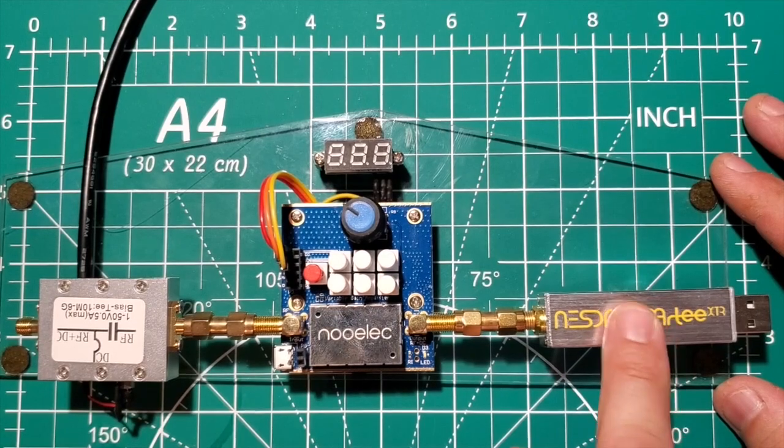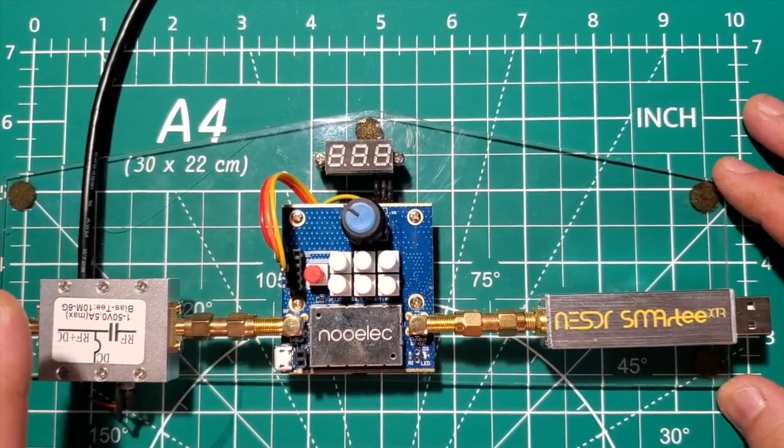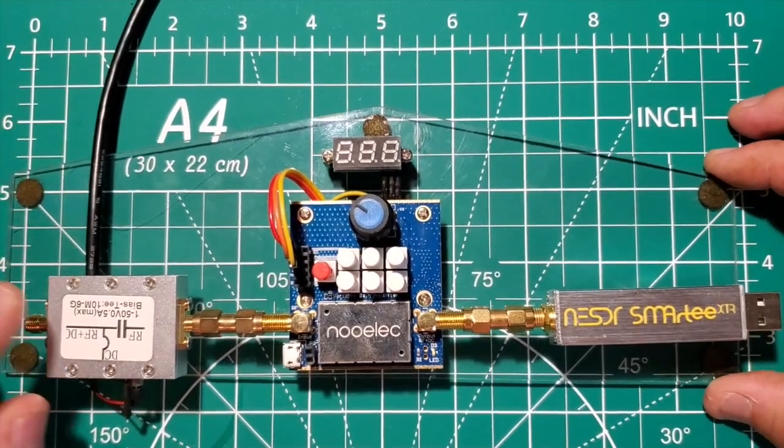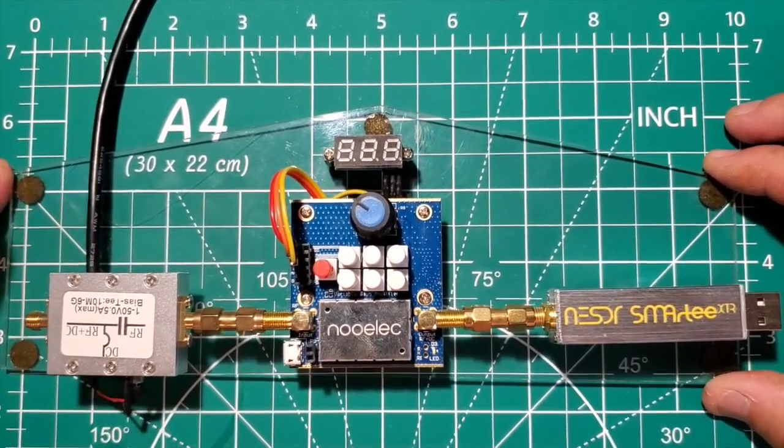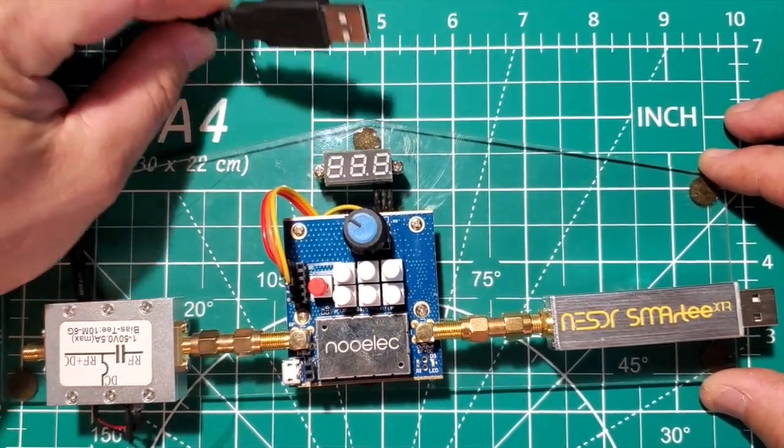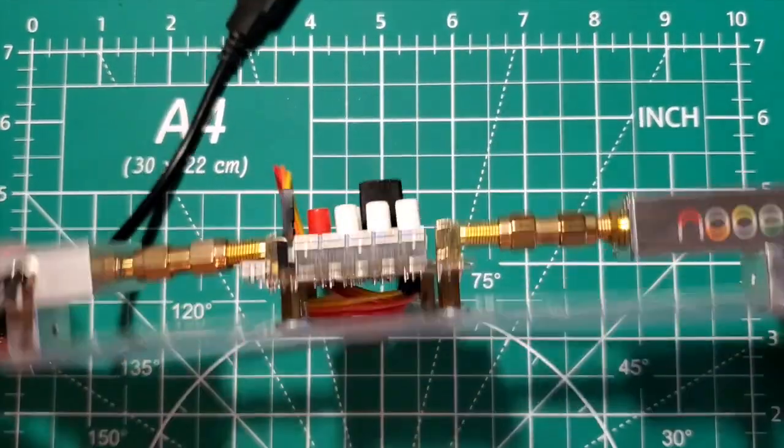So that is being powered off of that. Then the bias-T here that I'm using, which is good from one volt to 50 volts, I just have a USB connector on that I just soldered on.